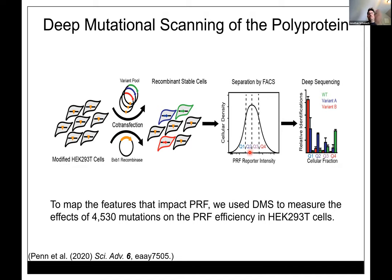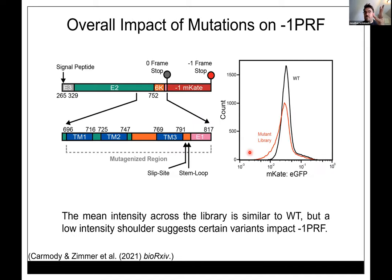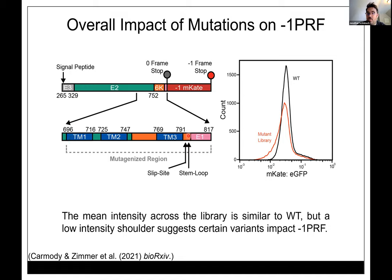We apply deep sequencing to track which mutants give more or less frameshift signal, and reconstruct where each falls on the intensity coordinate. I'll break this down region by region. The first region I'll focus on is the RNA structure, which has traditionally been the focus of most PRF investigations. The ribosome encounters a slippery sequence, then a stem-loop or pseudoknot downstream that stalls the ribosome — giving the tRNA time to wiggle and explore different reading frames.